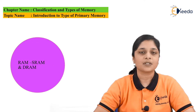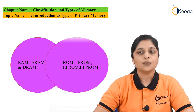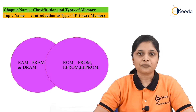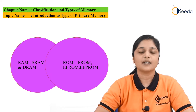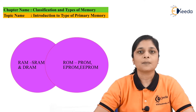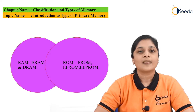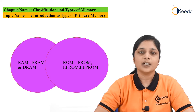Let's start with the discussion. Basically there are two types of primary memories. The first type is Random Access Memory, that is RAM. The second type is Read Only Memory, that is ROM.